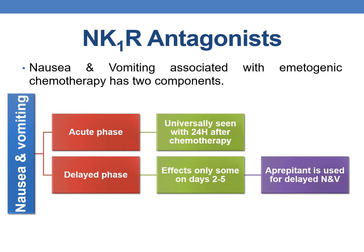NK1 receptor antagonists have potential anti-emetic properties and are employed to treat chemotherapy-induced nausea and vomiting. Nausea and vomiting associated with chemotherapy have two components: the acute phase, seen universally within 24 hours after chemotherapy, and the delayed phase, affecting only some patients on days 2 to 5. The NK1 receptor antagonist aprepitant is used for delayed nausea and vomiting.